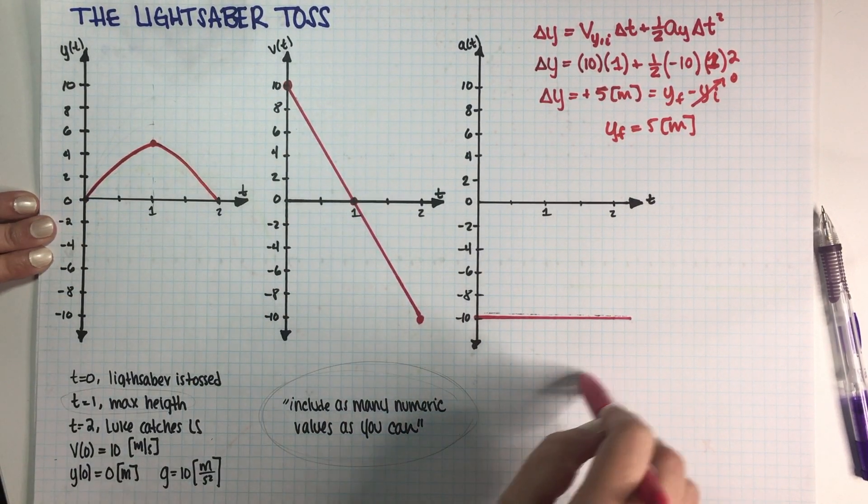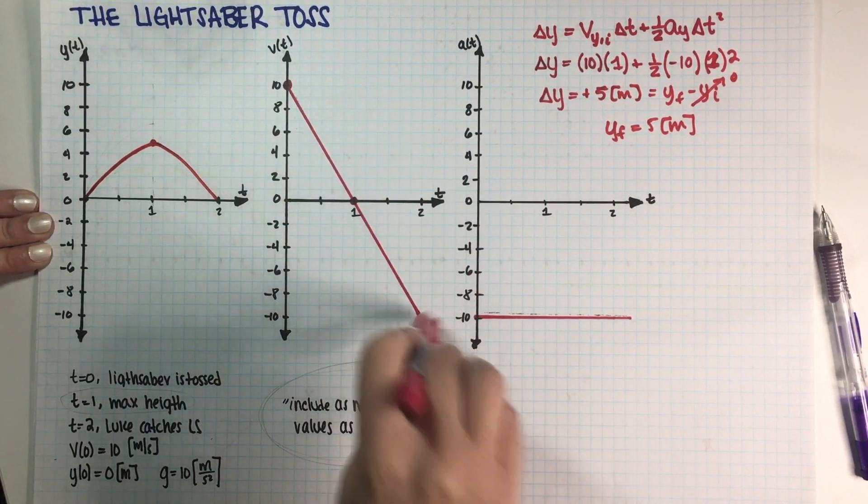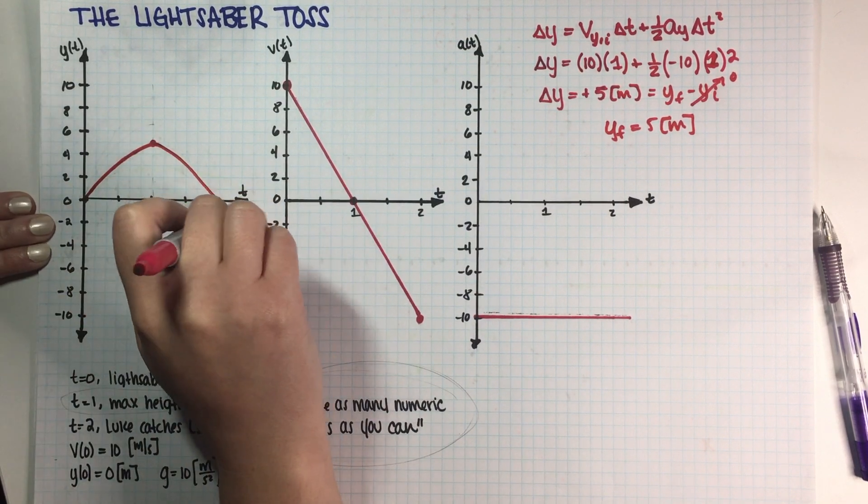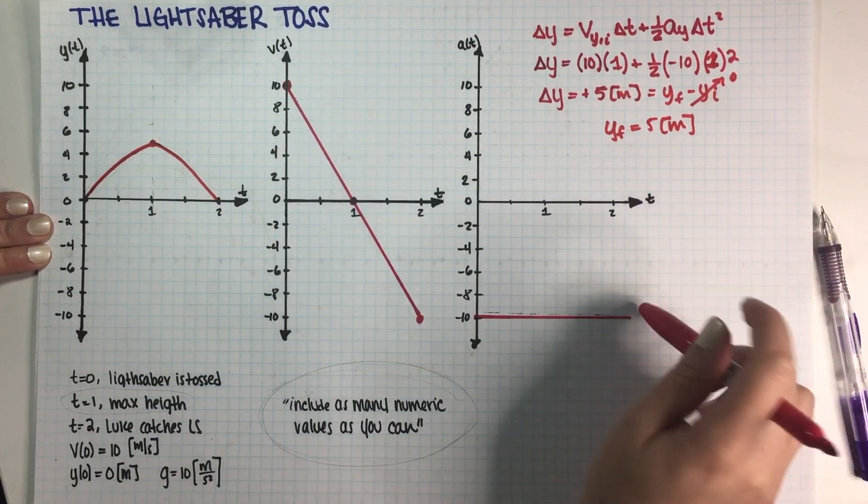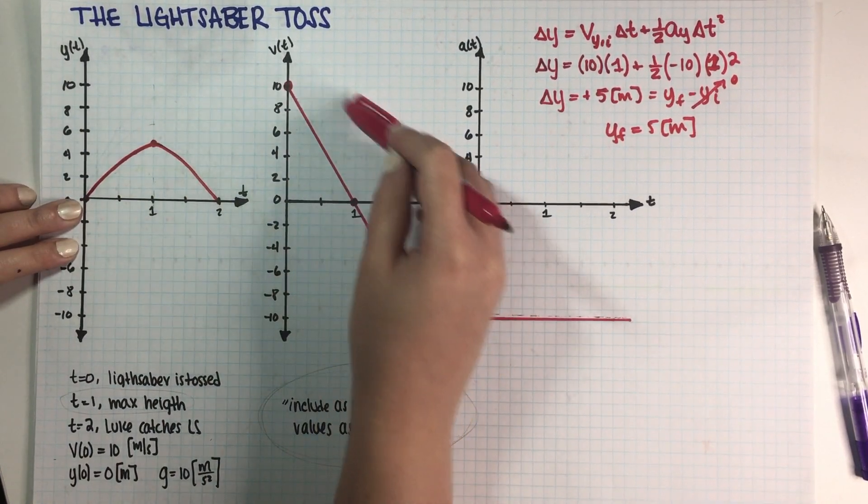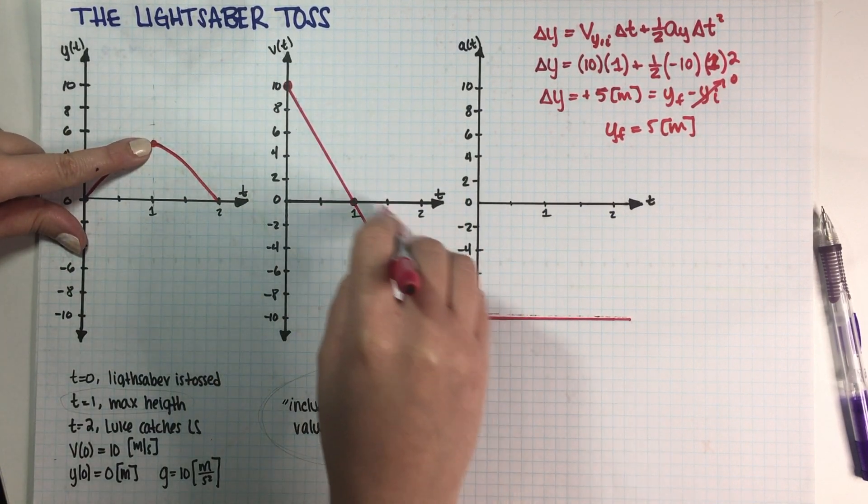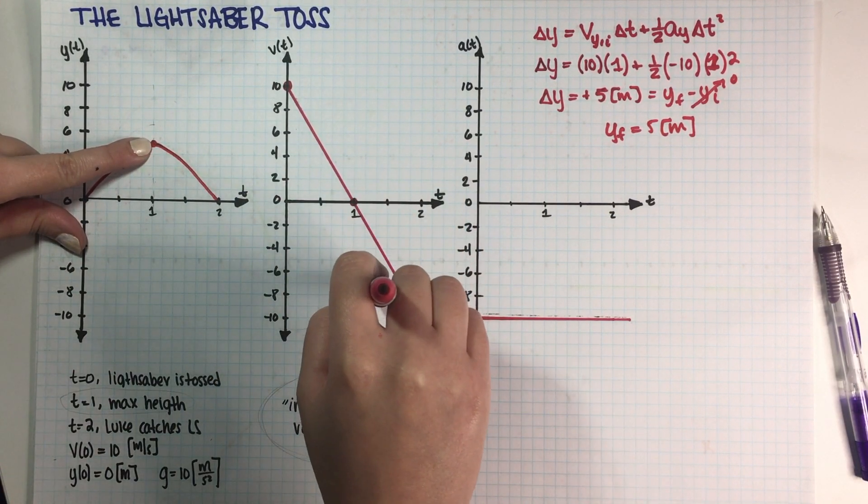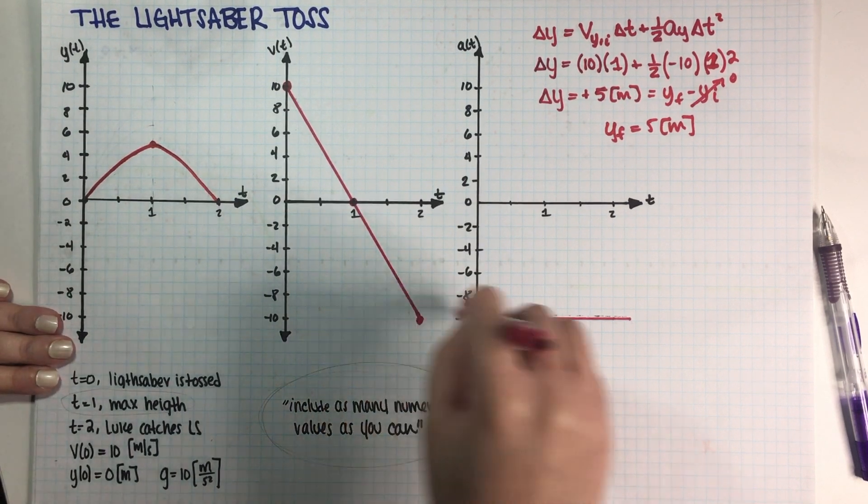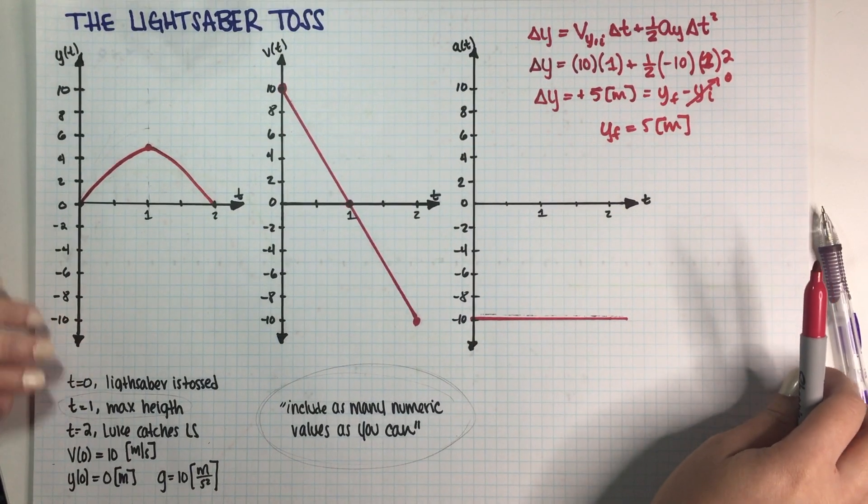Now we have every single possible value that we can have. We have initial velocity, final velocity, acceleration. All my values are correct over here. And as you can see, it makes sense because my lightsaber is going up on the first second, which is the positive side over here. It is going down on the second second. And my acceleration, I mean, it's just minus 10.